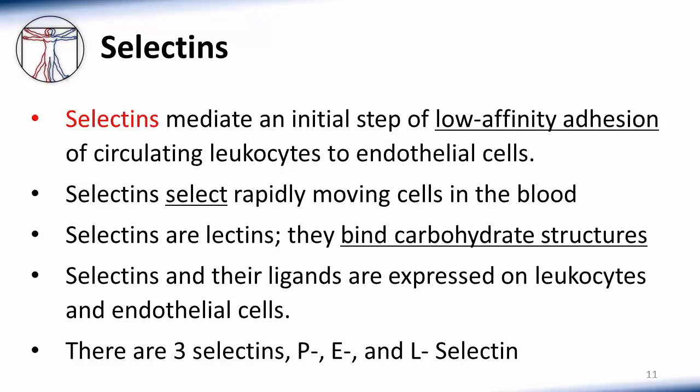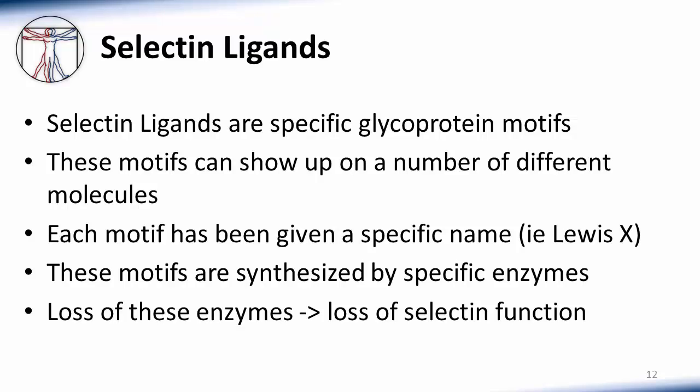Let's go through the specific types of molecules required for leukocyte extravasation. First, the selectins. Selectins are cell surface adhesion molecules that mediate an initial step of low-affinity adhesion of circulating leukocytes to endothelial cells — they select rapidly moving cells from the blood. The extracellular domains of selectins are similar to C-type lectins, so-called because they bind carbohydrate structures. Some selectins are expressed on leukocytes and some on endothelial cells. There are three specific selectins, but they all function in a similar manner. Selectin ligands are specific glycoprotein motifs that can show up on a number of different molecules. These motifs are synthesized by specific enzymes, and loss of these enzymes leads to loss of selectin function.